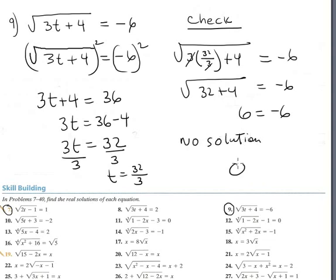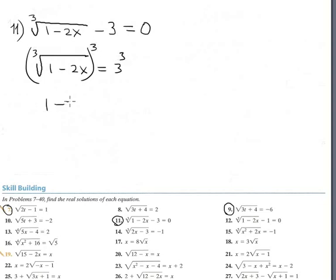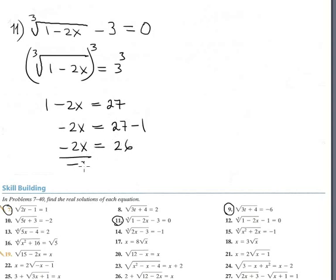The answer is the empty set — no solution. Next, this equation contains a cubic root. Cubic roots are nice because we never get a spurious solution. The strategy is the same: isolate the radical, then cube both sides. This gives 1 minus 2x equals 27. So negative 2x equals 26, and dividing by negative 2, x equals negative 13.